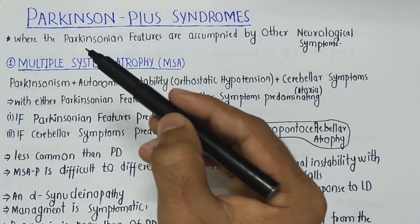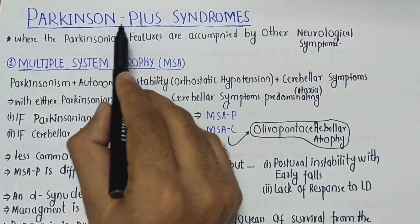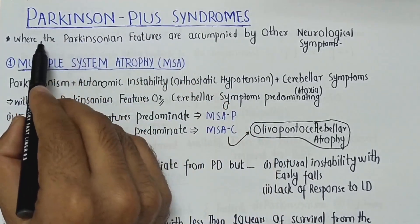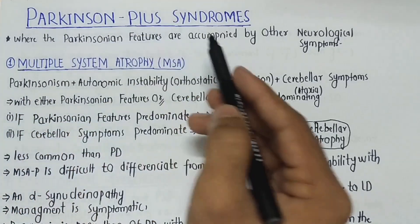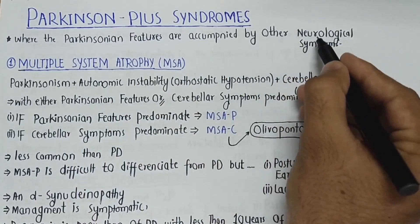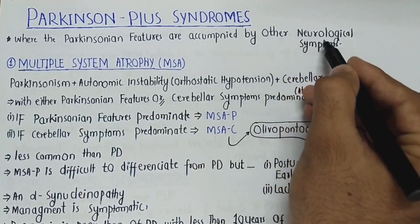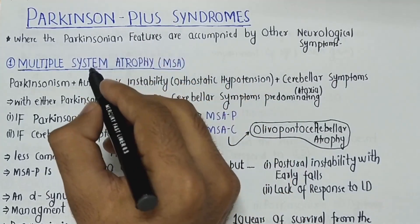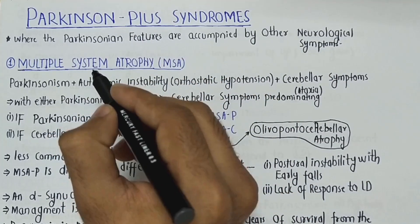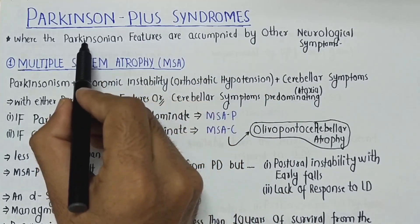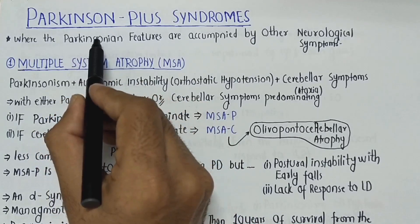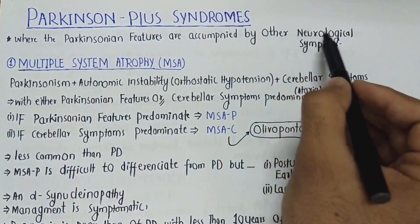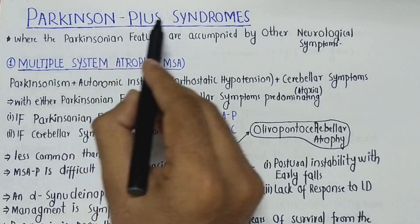So what is meant by Parkinson's plus syndrome? A disease where the Parkinsonian features are accompanied by other neurological symptoms as well is called Parkinson's plus syndrome. We will see that Parkinsonism will be accompanied by other neurological symptoms in Parkinson's plus syndrome.